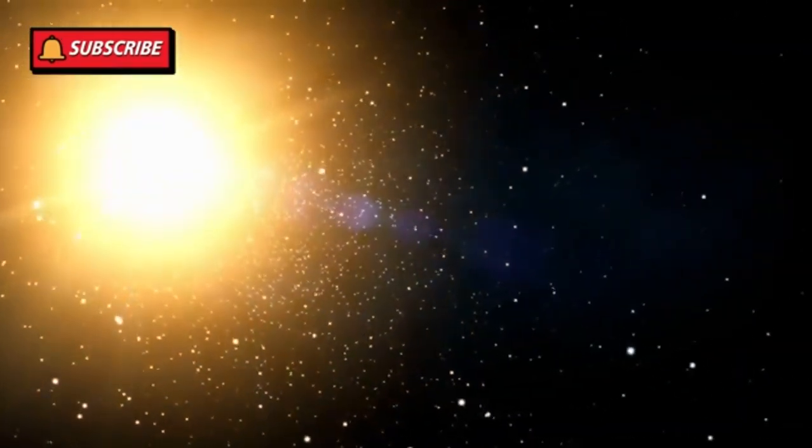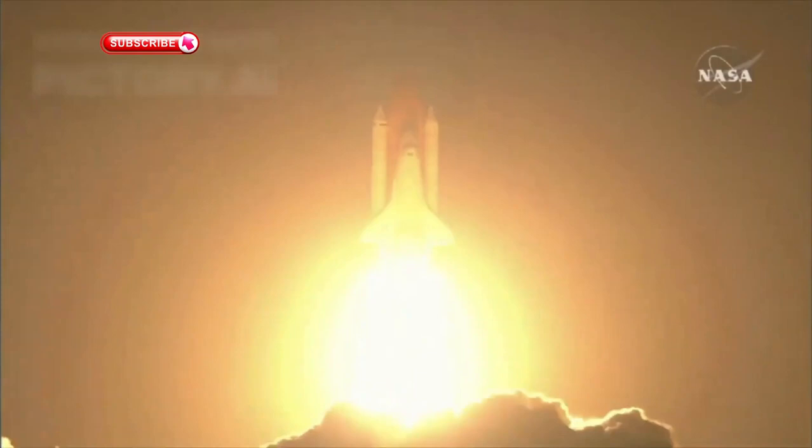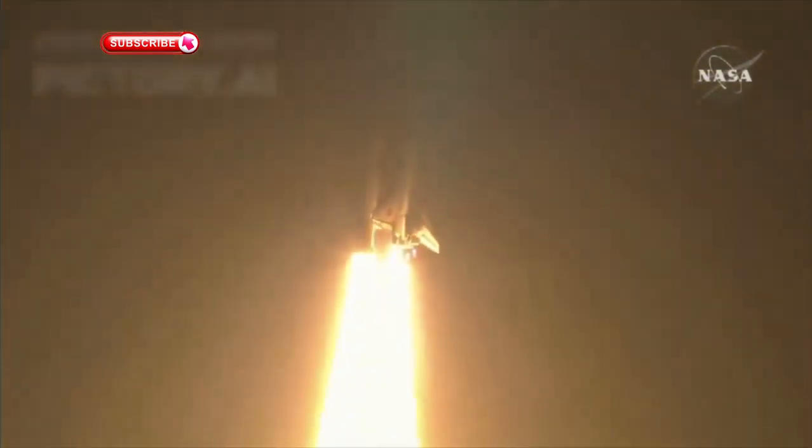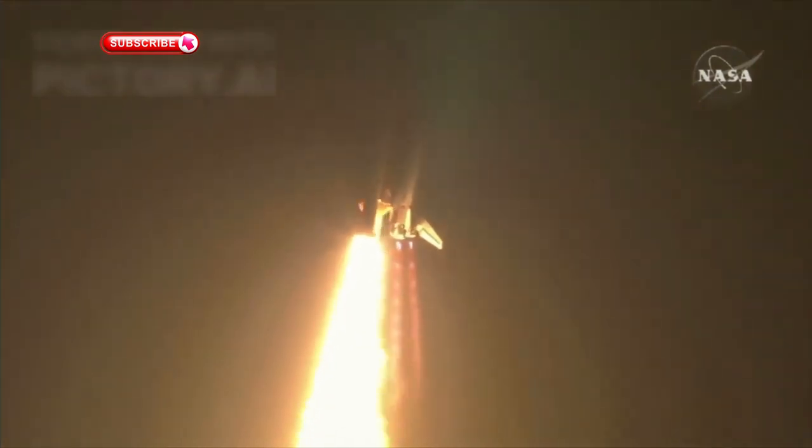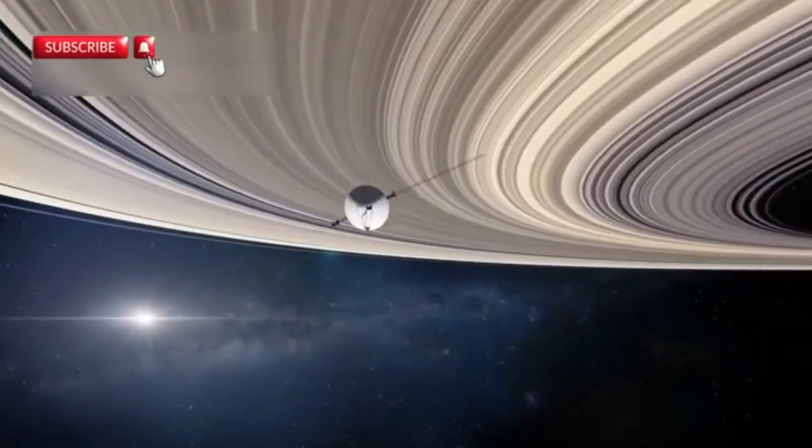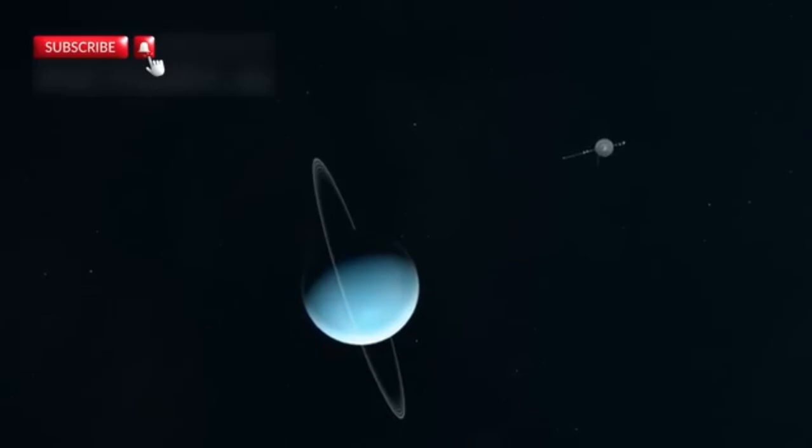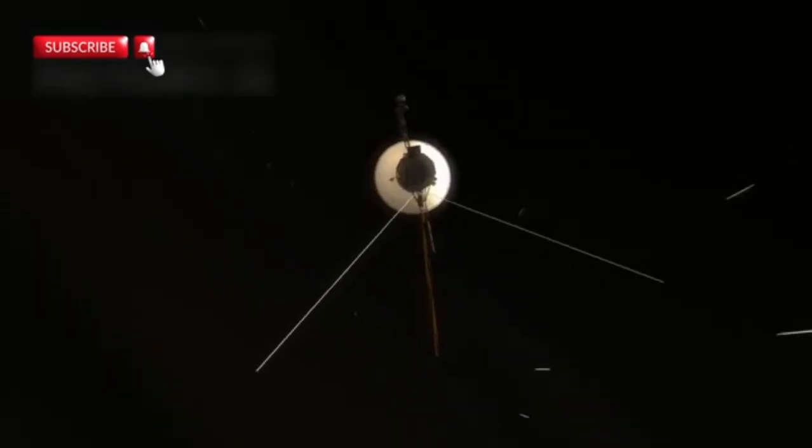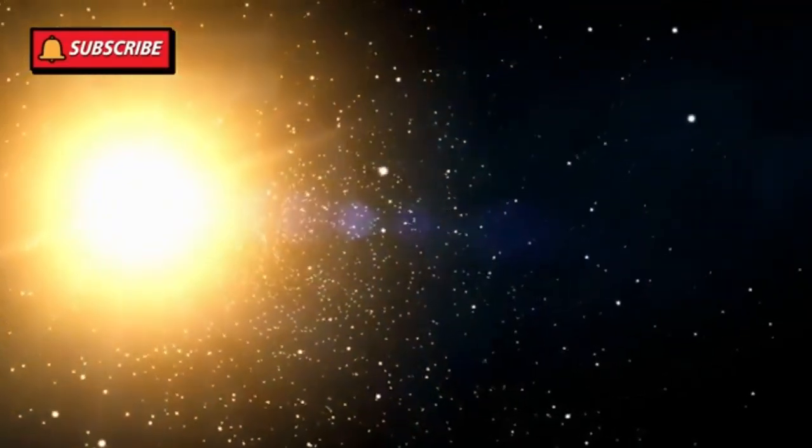Voyager 1 had a twin, Voyager 2, launched just weeks earlier. Built with 1970s technology, these probes were marvels of their time. There were no touchscreens, no smartphones, no artificial intelligence—just hand-soldered circuits, analog components, and the ingenuity of engineers who dared to think beyond Earth's boundaries.